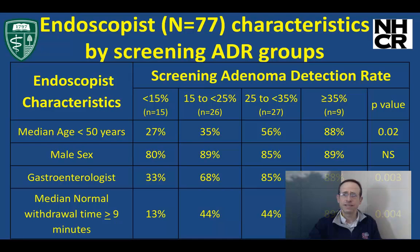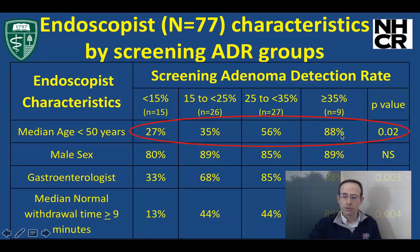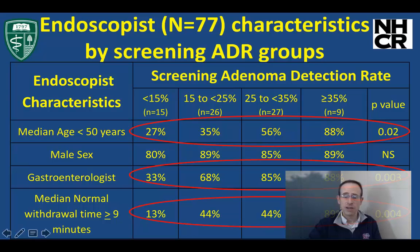An interesting finding is that when you stratify by ADR, you see that younger endoscopists achieve higher ADR. You also see that higher ADR is more likely to be achieved among gastroenterologists than non-gastroenterologists. And finally, the higher the normal withdrawal time for endoscopists, the higher the proportion achieving 35% or more — so more careful endoscopists are achieving high ADRs.